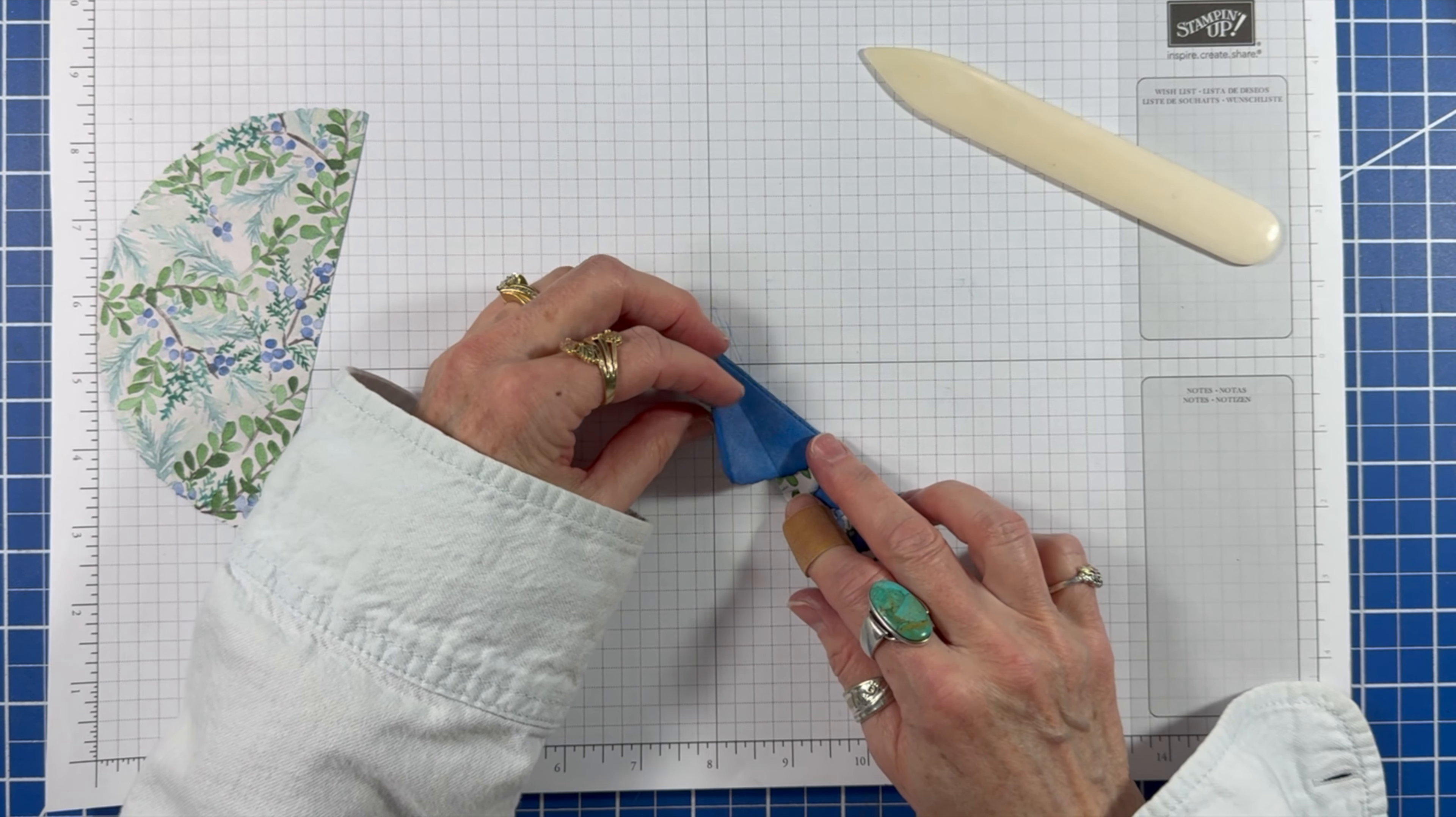For my second tree I'm going to do things a little differently. Pull the top down just as I did in the first tree. Then I'm pulling the cut edge up about halfway and finger pressing the crease.